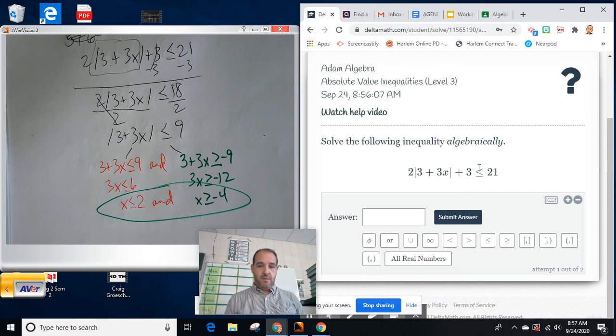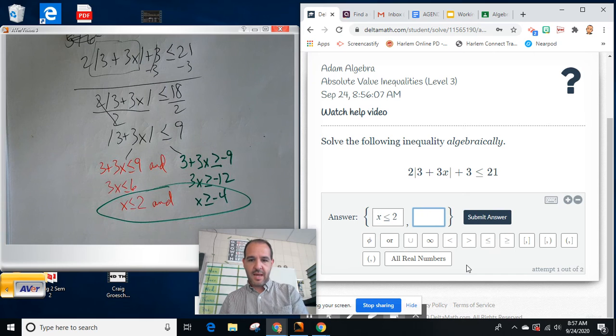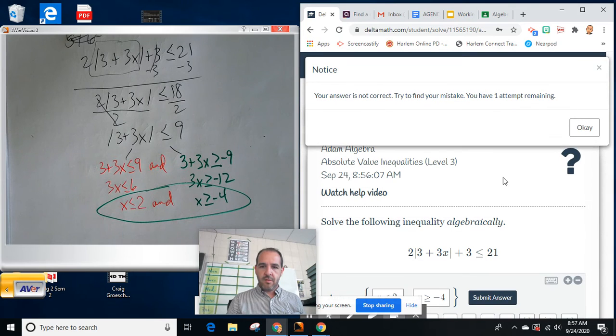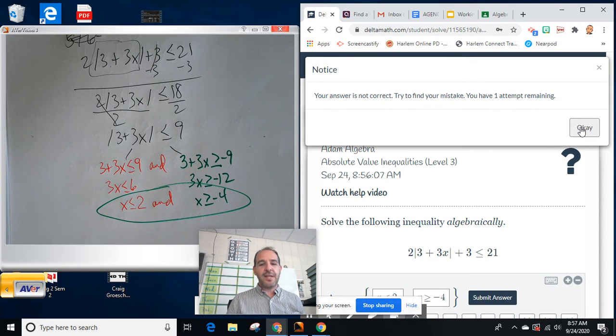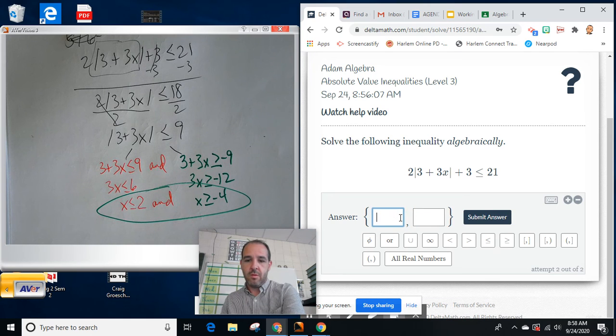So how am I going to put the and statement in? Well this gets a little more hairy because there's not an and button. So let's try something. Let's try X is less than or equal to 2 and X is greater than or equal to negative 4. Now let's see if it lets me do this. Now it's telling me my answer is not right. It is, but they don't like the way that I wrote it. So here's what we're going to do.